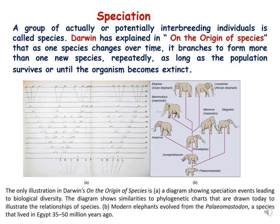What is a species? It is a group of interbreeding or potentially interbreeding individuals. Darwin, in his book On the Origin of Species, explained that as one species changes over time it branches to form more than one new species repeatedly, as long as the population survives or until the organism becomes extinct.